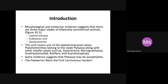Or they have a trochophore larval stage. That is why those members, organisms, or animals fall into the clade called Lophotrochozoa. Other phyla also come under this clade, including Gastrotrica, Micrognathozoa, Gnathostomulida, Rotifera, and Acanthocephala — different phyla — and this is a Lophotrochozoa clade.